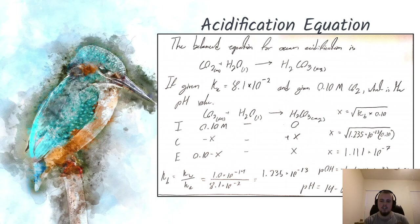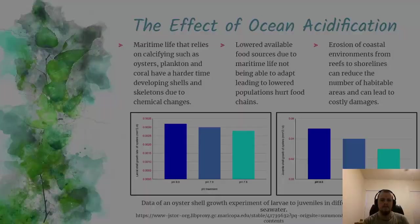With our pOH, we plug that x value in with the negative log, giving us 6.954. The final step is to find the pH, which is 14 minus 6.954, to find our value to be 7.046.